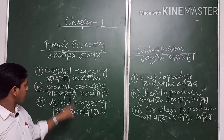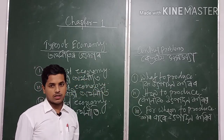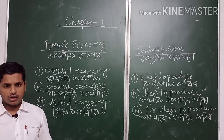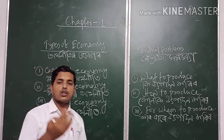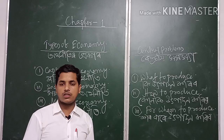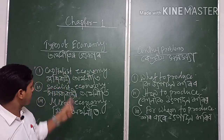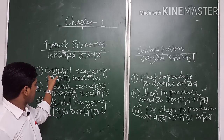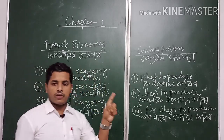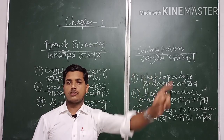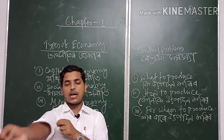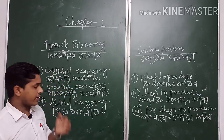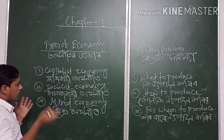Now, coming to Capitalist Economy: Capitalist Economy refers to those economies where the means of production are owned, controlled, and operated by the private sector.